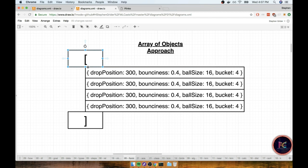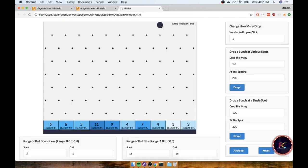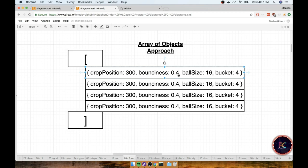So in this case I have a full array of four different records that means that I dropped a ball four different times. The first time I dropped the ball at position 300. So again we can use the drop position up here at the top right hand side. So 300 would be like just about there. And then my ball bounciness was 0.4. My ball size was 16 and it landed in bucket number 4. Now this is one approach that we can use to record and store data in the world of JavaScript.